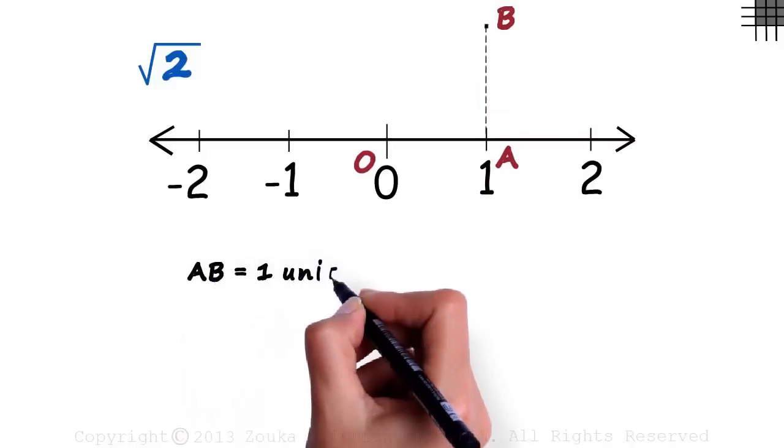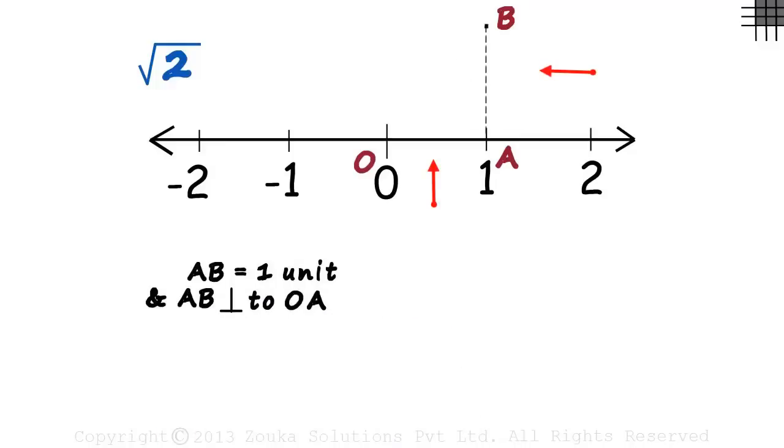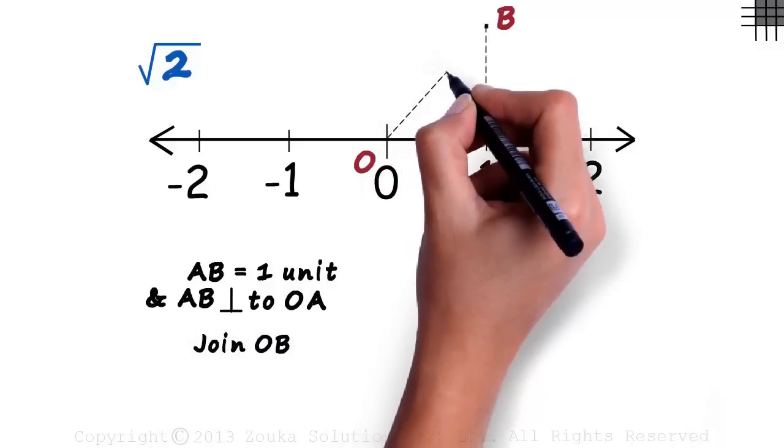We just drew AB equal to one unit perpendicular to OA. Both these lengths equal one unit. Now all we have to do is join OB like this.